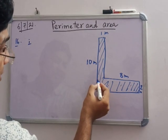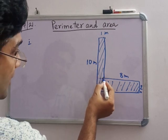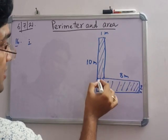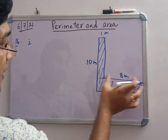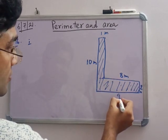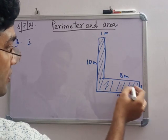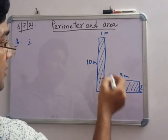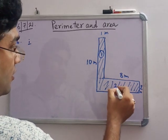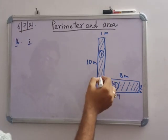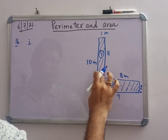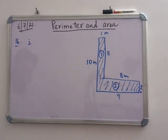I am taking this part. The total of this part is 9, because this is 8 plus 1, which is 9. And this is 2 as given. So 9 into 2 is the area of this part. For figure 1, this is 1, this is 1, and this is 8. So 8 into 1 equals 8. And this part is 9 into 2, which is 18.